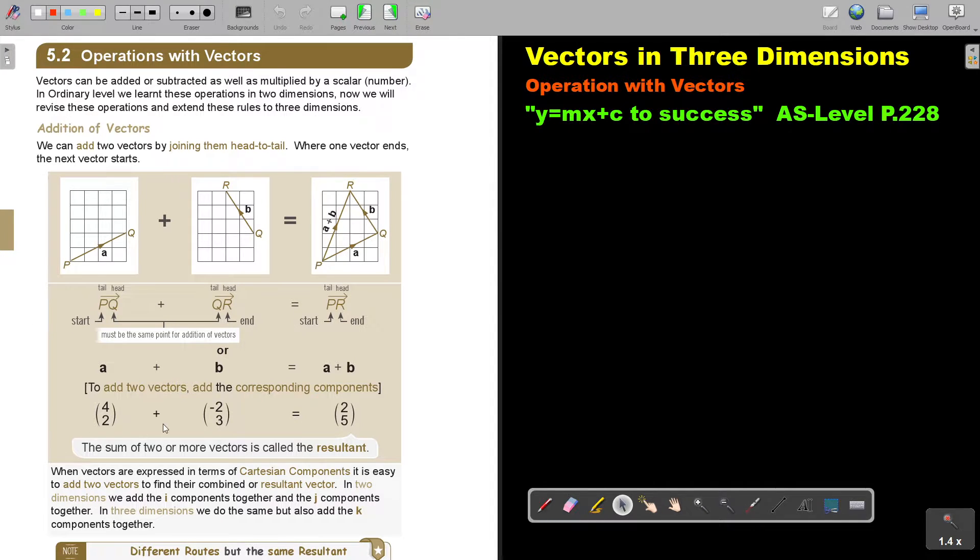Addition of vectors: we can add two vectors by joining them head to tail, where one vector ends, the next vector starts. So we are joining them, and then we say that PQ plus QR is equal to PR. So we start at the same point and we end at the same point.